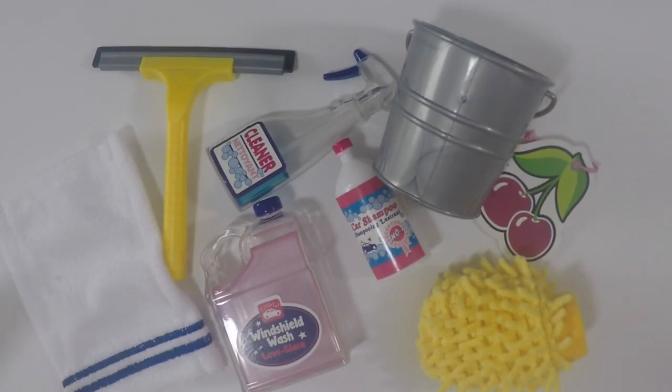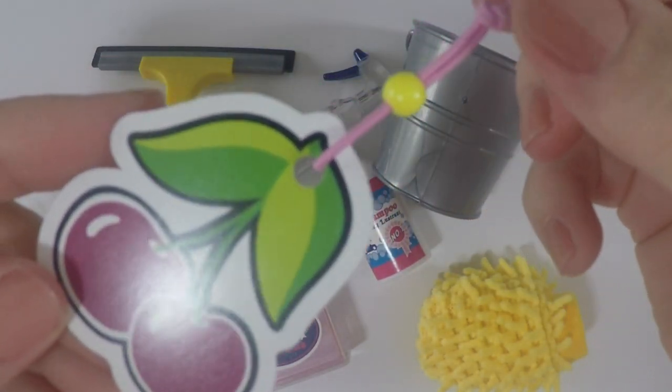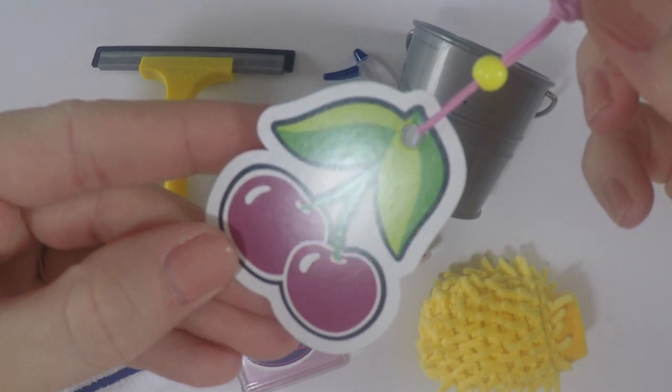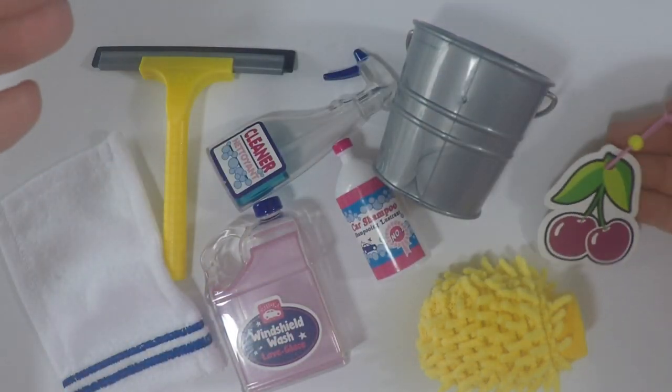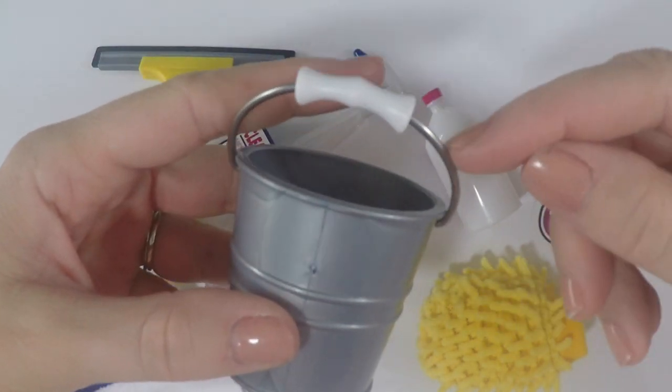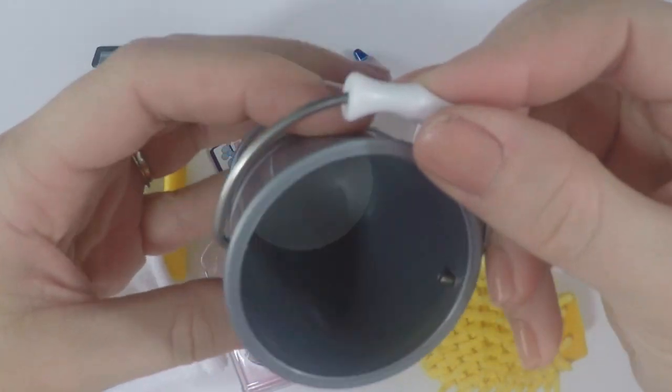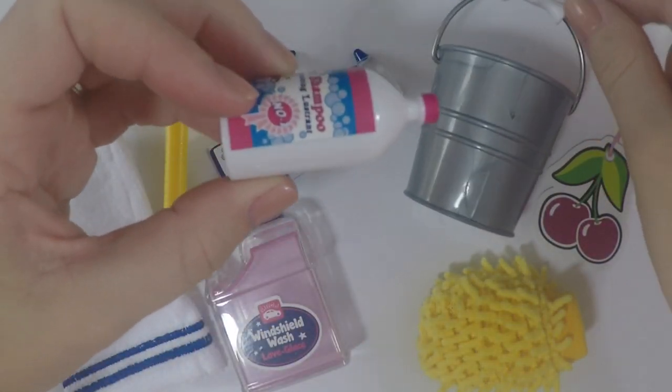Now we have the car wash related items, so everything that you need to clean or freshen your car. Here is the car freshener that you actually hang on the mirror. My Jeep doesn't have a mirror to hang it on. Here's the bucket. I have several of these buckets from other Our Generation sets but none of them have the metal handle so that one's nice.